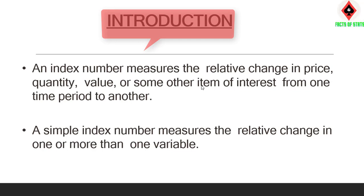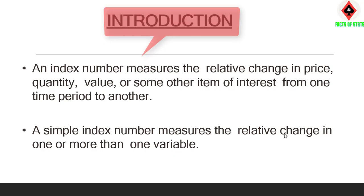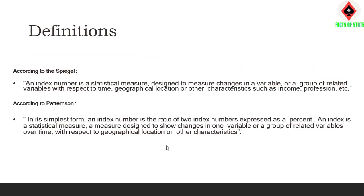It measures prices and quantity. For example, we may want to measure the relative change in prices of gold. A simple index number measures the relative change in one or more than one variable. Definition: An index number is a statistical measure designed to measure the change in a variable or a group of related variables with respect to time, geographical location or other characteristics such as income, profession, etc.